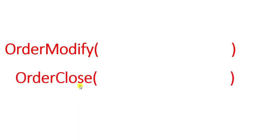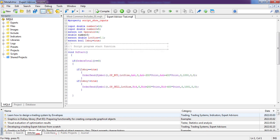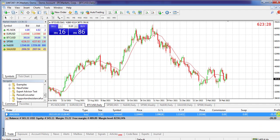The OrderModify predefined function is very similar to OrderSend — we give it the symbol, time frame, lot, and so on. We can also use OrderClose to close an open order, which is similarly structured, specifying the symbol, time frame, and how many lots to close, for example half of an open lot.